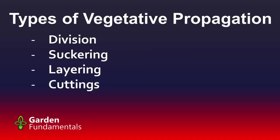Here are four common ways to do vegetative propagation: division, suckering, layering, and cuttings. We're going to have a quick look at the first three, and then spend most of tonight looking at cuttings.